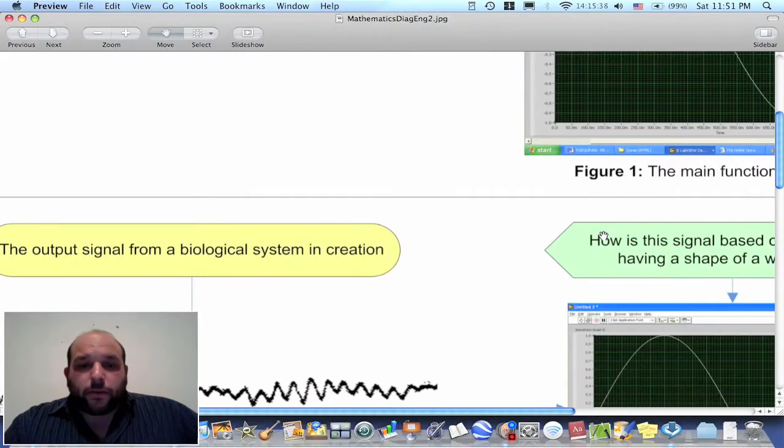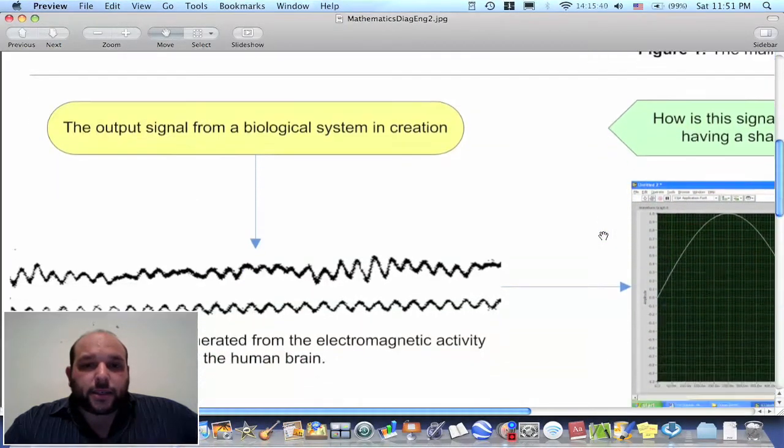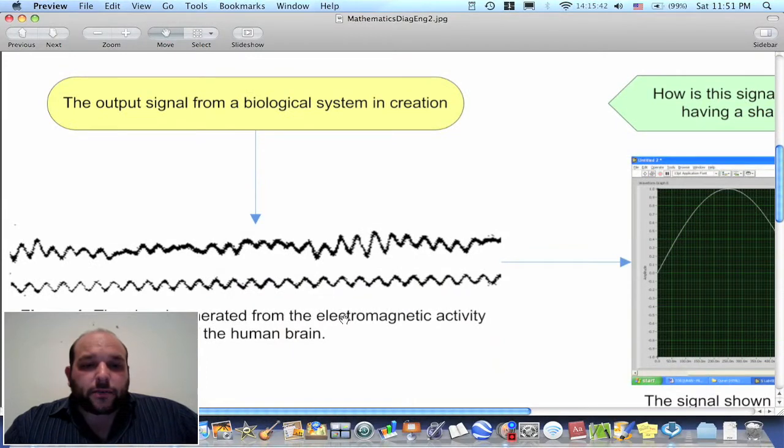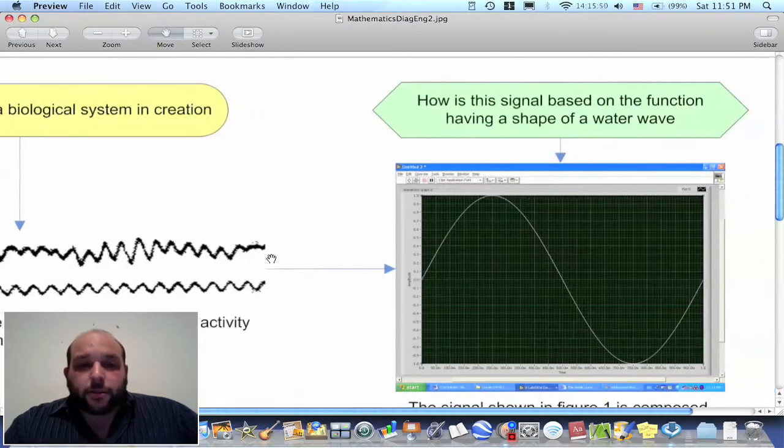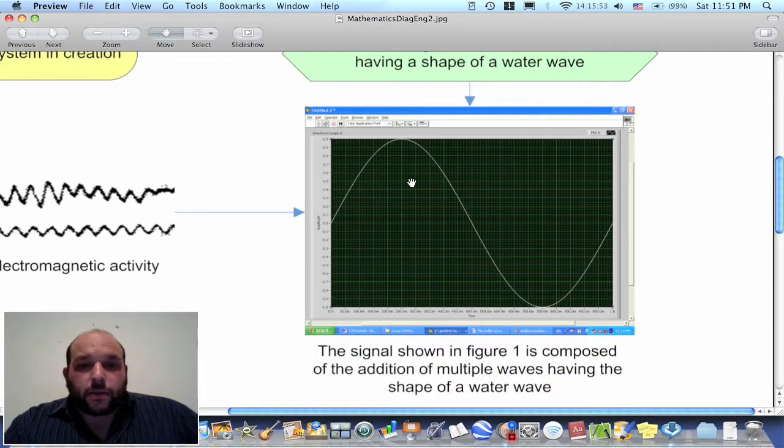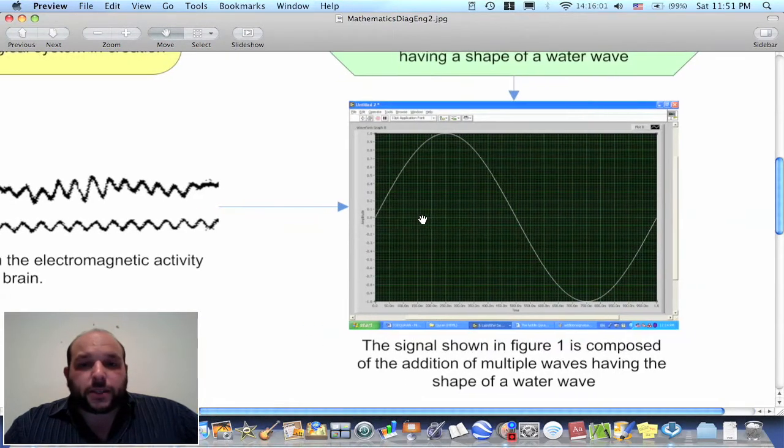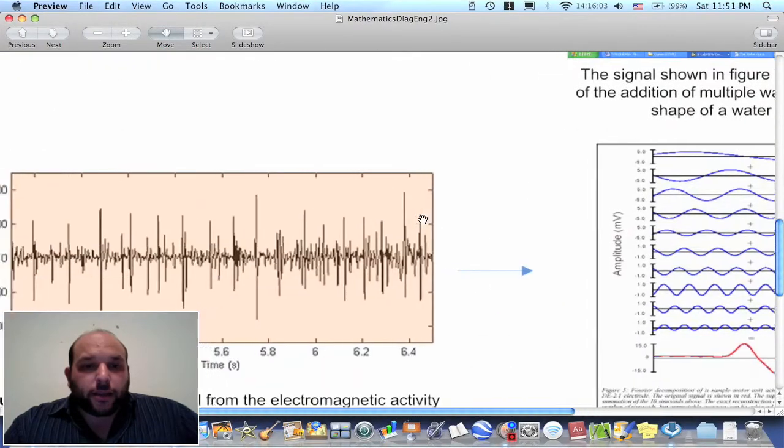Again, another proof of this. If we look at signals in creation, this one is the signal generated from the electromagnetic activity of human brain. When your brain functions, it produces this kind of signal. This signal is composed, is simply the addition of the basic signal of creation, as we learned from the Quran, this sine wave, with different timings and different kind of number and sequence of these signals.